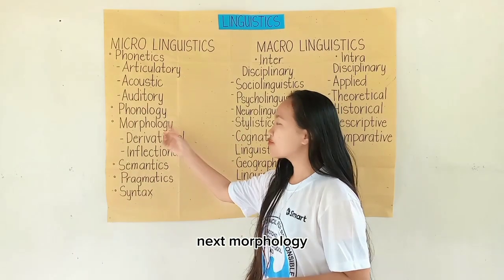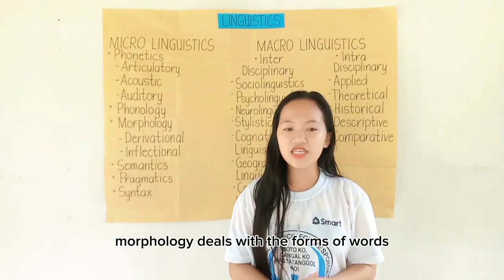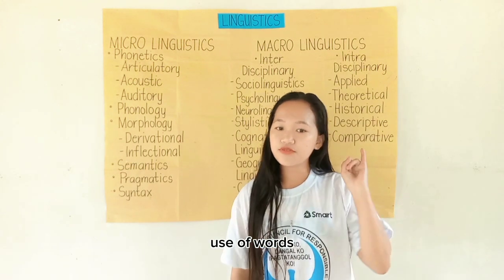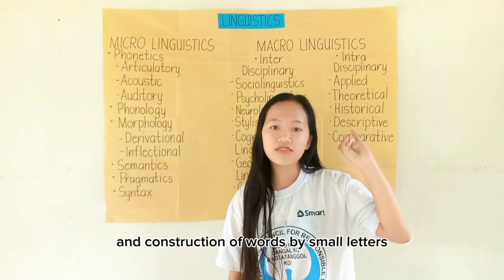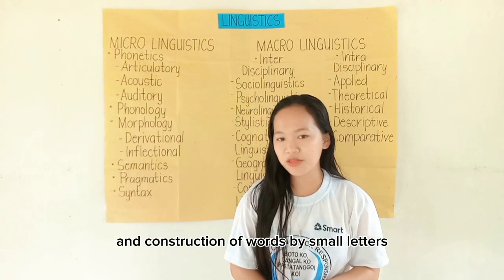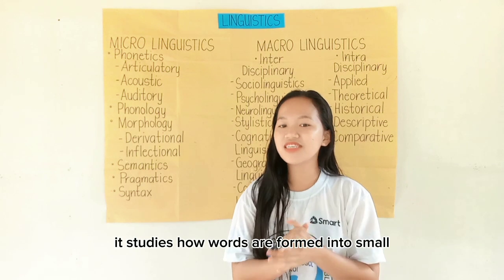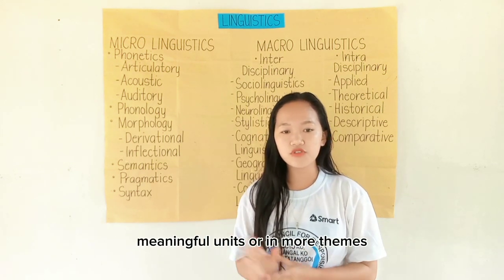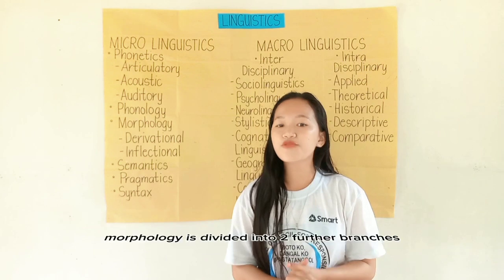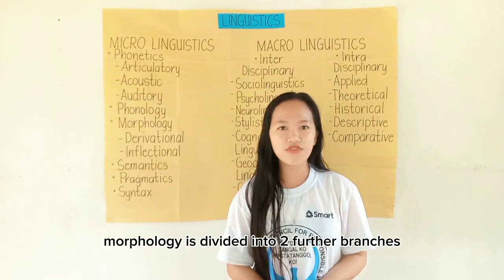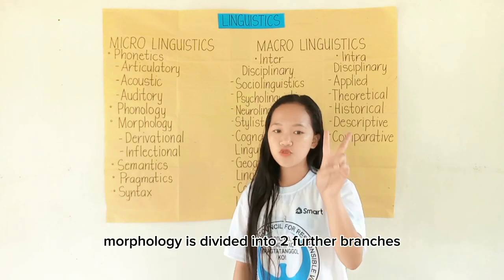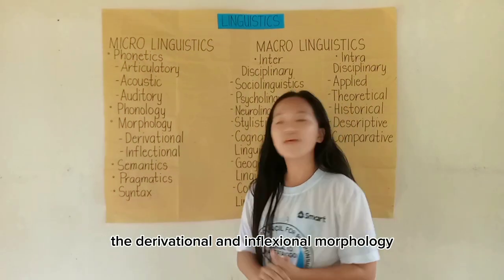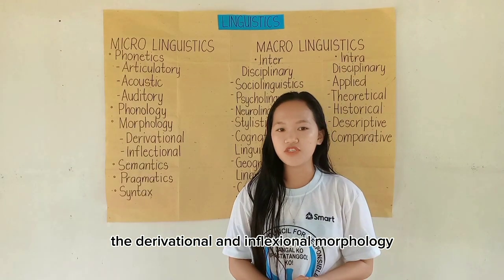Next, morphology. Morphology deals with the forms of words, use of words, and construction of words. It studies how words are formed into small meaningful units called morphemes. Morphology is divided into two further branches: derivational and inflectional morphology.